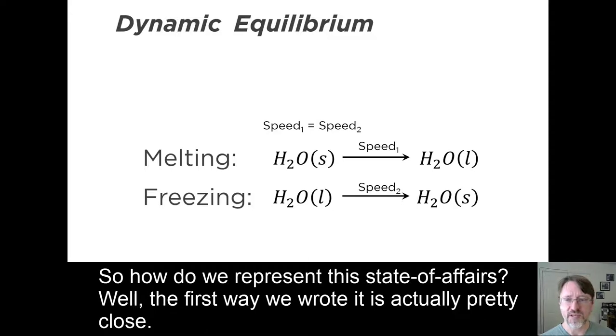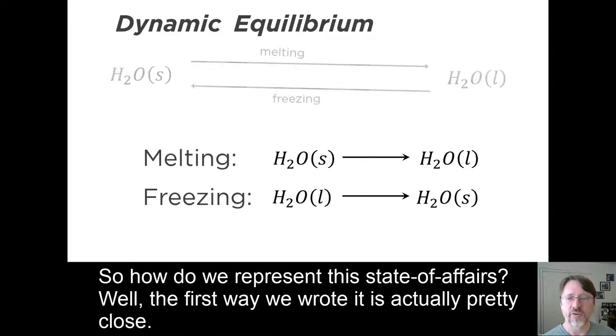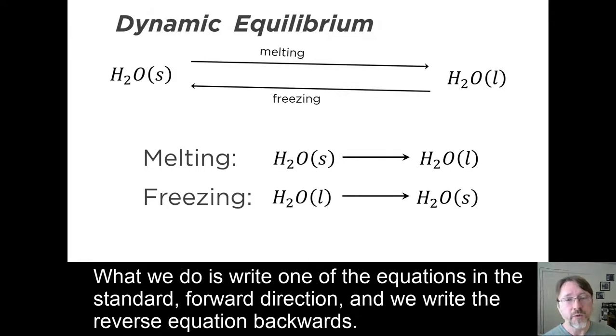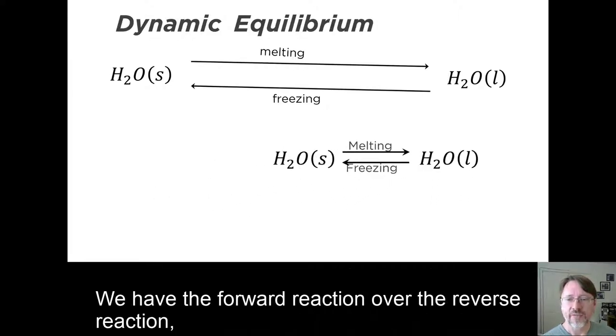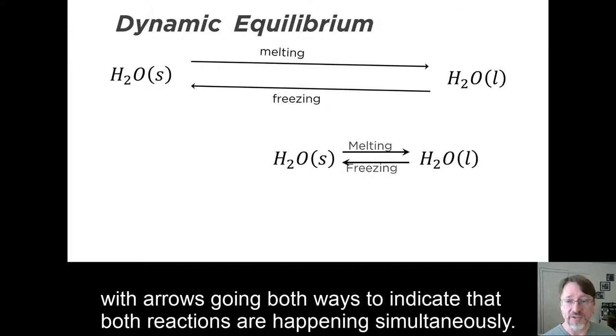So how do we represent this state of affairs? Well, the first way we wrote it is actually pretty close. What we do is we write one of the equations in the standard forward direction, and we write the reverse equation backwards. And then we stack them on top of each other. We have the forward reaction over the reverse reaction, with arrows going both ways, to indicate that both reactions are happening simultaneously.